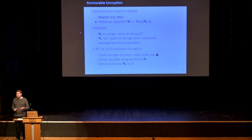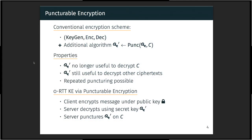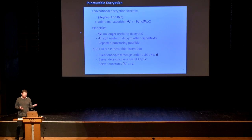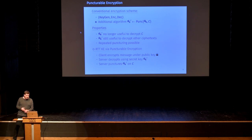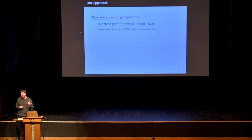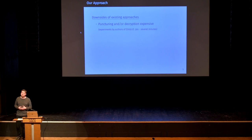How does this help with zero round-trip time key exchange? It's quite straightforward. You encrypt a message under the public key of the server, and the server can then decrypt it using the secret key. Once decryption is performed, the server punctures the key on the ciphertext. Later on, this key will no longer be useful to decrypt that ciphertext, and then it deletes the old key. If we have a puncturable encryption scheme that provides nice properties in this context, we have our efficient zero round-trip time key exchange protocol.